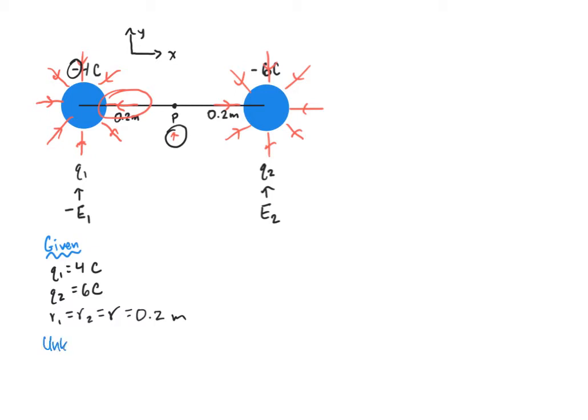So after that whole long spiel about givens, I can write up my unknown, and that is going to be so easy because we know that our unknown is going to be the electric field at point P, which I'm just going to call regular E, not E1, not E2.